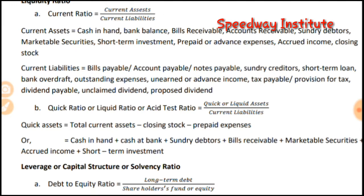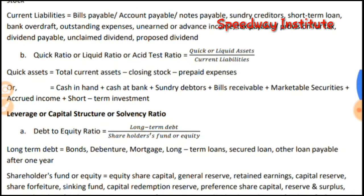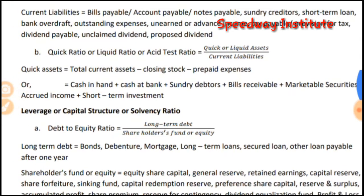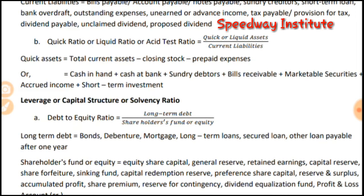Quick ratio, also called liquid ratio or acid test ratio, is equal to quick or liquid assets divided by current liabilities. Quick assets equal total current assets minus closing stock minus prepaid expenses, or alternatively: cash in bank plus sundry debtors plus bills receivable plus marketable securities plus accrued income plus short-term investment.